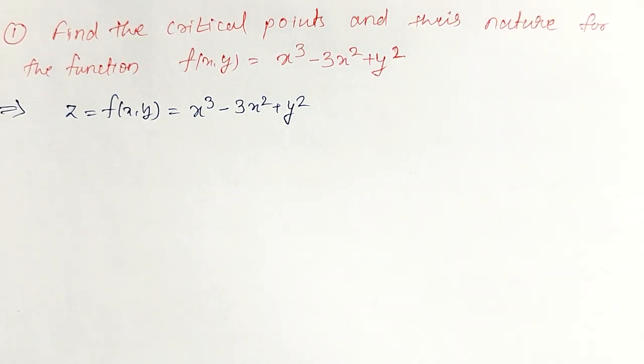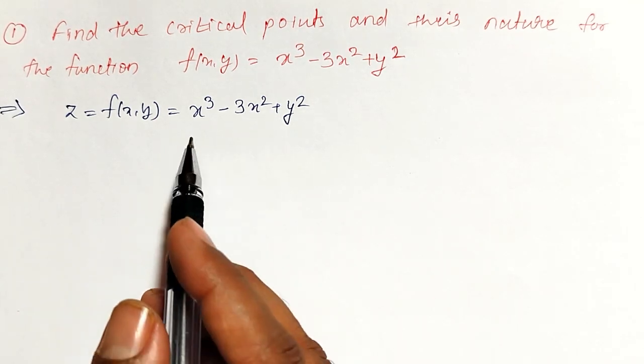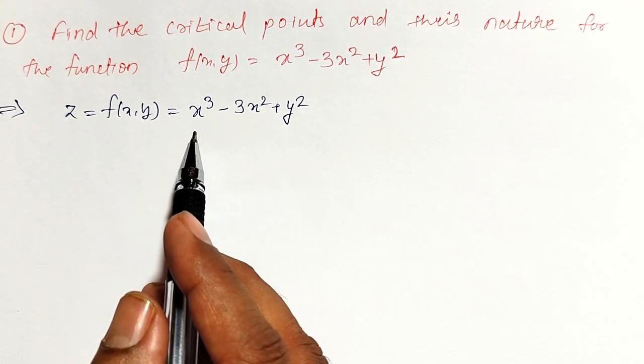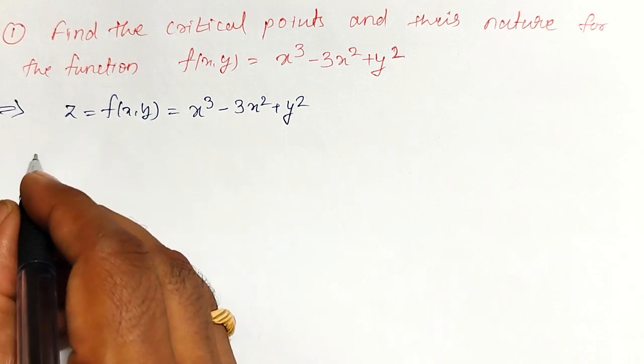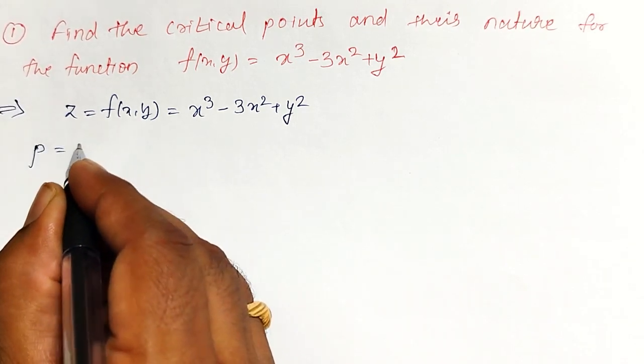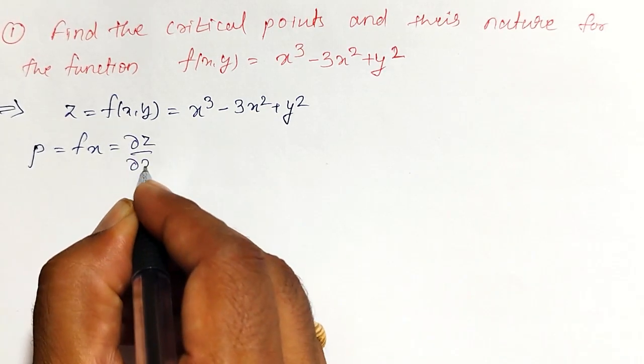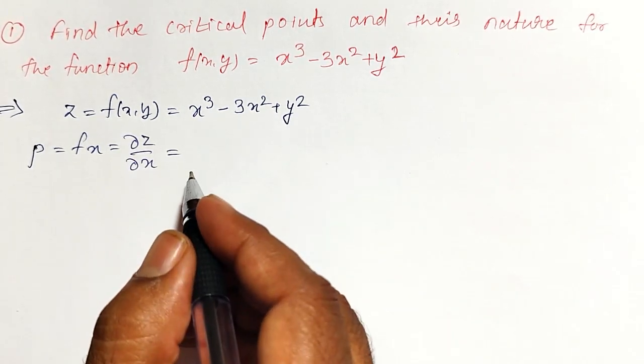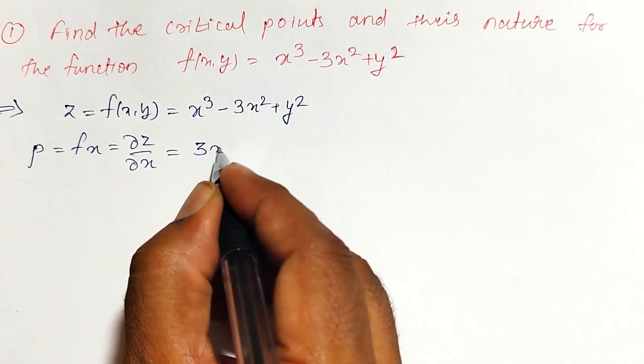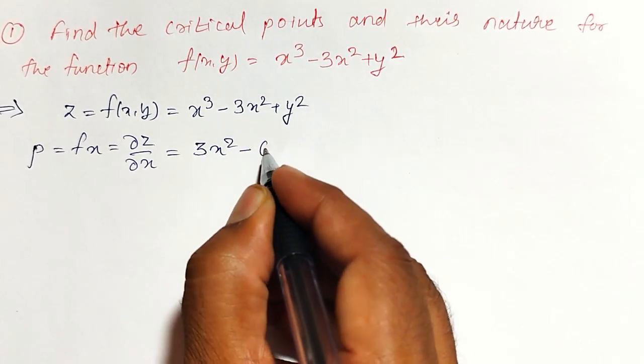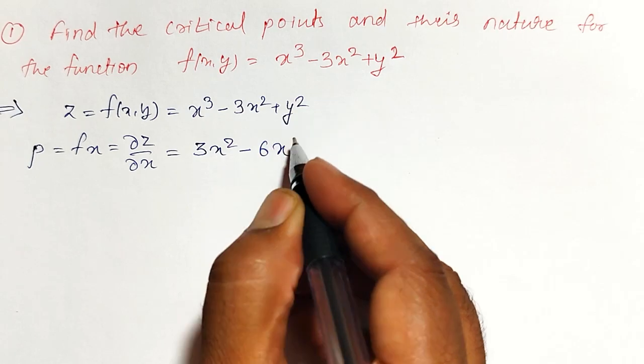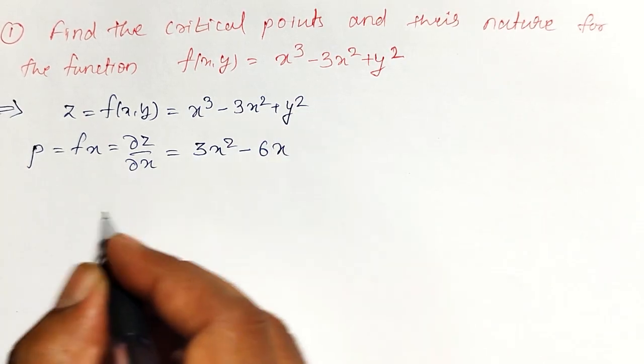For our convenience, let us find out all the five partial derivatives up to second order for this given equation. That is p equal to fx or partial z by partial x. Partial derivative with respect to x will become 3x square minus 6x. The answer is 0.